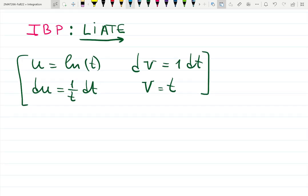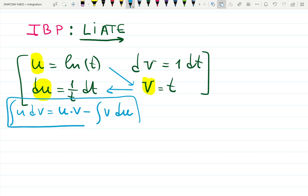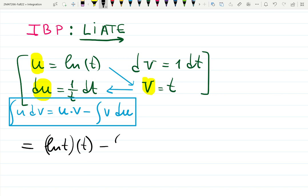Now you either remember the formula which is u times v minus integral v du, or you remember it visually: u times v minus integral of v du, cross product and bottom product. That is the formula of integration by parts. Integral of u dv equals that. That means that our previous integral becomes ln t times t minus integral t times one over t dt.